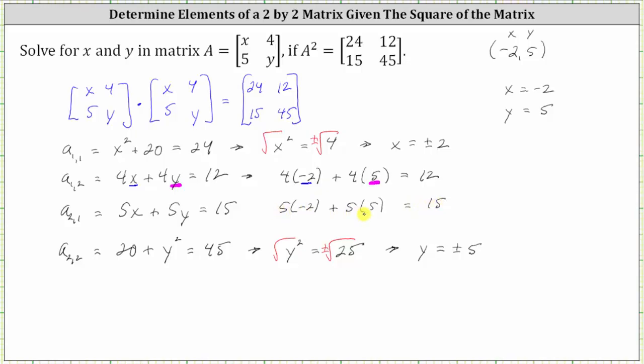And we have negative 10 plus 25, which is 15. So now we know all four equations are satisfied when x equals negative two and y equals positive five, which can be expressed as an ordered pair or as two equations. I hope you found this helpful.